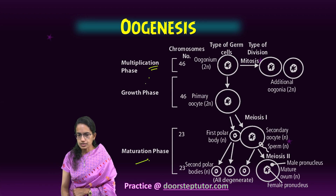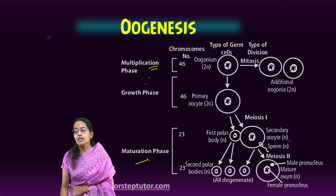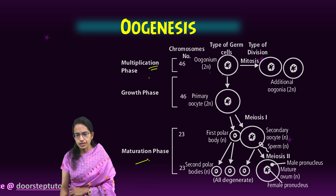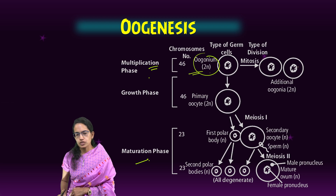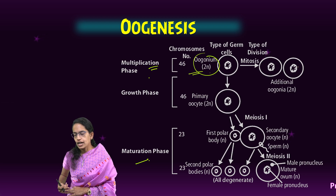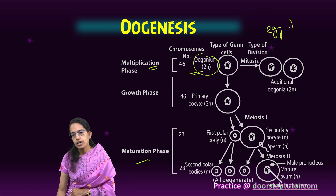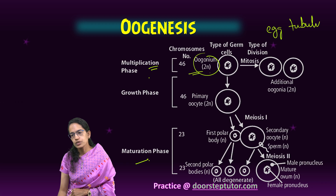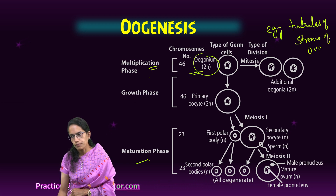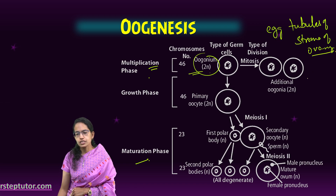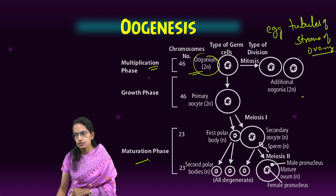The first phase is the multiplication phase. Here, oogonia are formed by the process of mitosis. Oogonia divide by mitosis into additional oogonia, and this occurs from the stroma of the ovary, leading to the formation of a multicellular mass known as an egg nest.